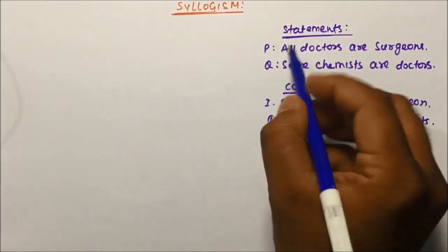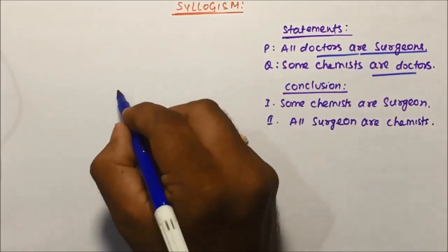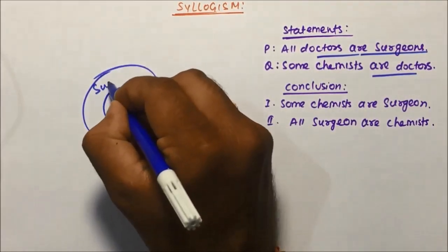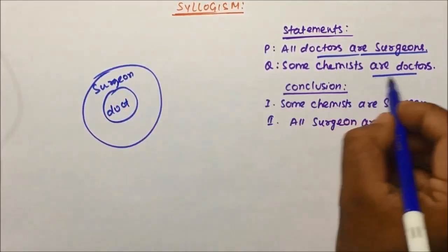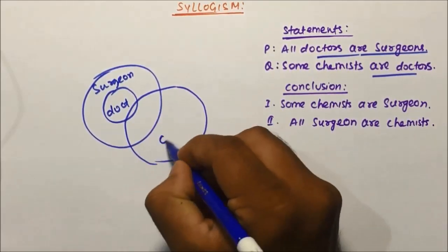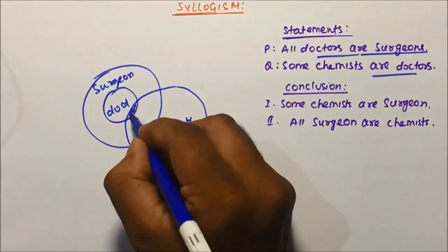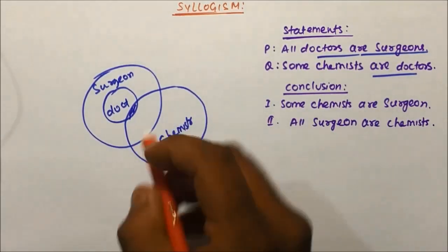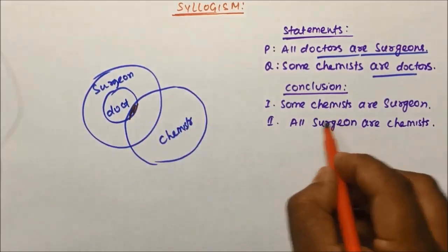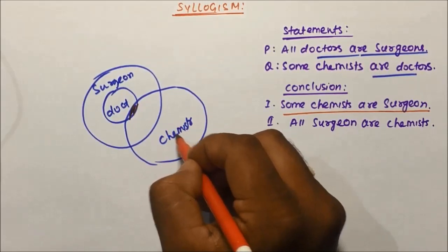Question number three — let's draw a diagram for the statements. 'All doctors are surgeons' — all doctors are placed inside surgeons. 'Some chemists are doctors' — some part of chemist will be doctor and some part of doctor will be chemist, shown as intersecting circles overlapping within the surgeon circle.